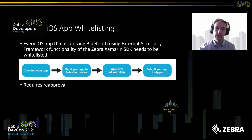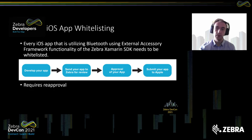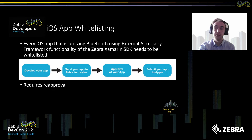iOS requires whitelisting of your apps. Every iOS app utilizing Bluetooth using the external accessory framework functionality of our SDK will need to be whitelisted. The process is: you develop your app, send it to Zebra for review, and once approved, you can submit your app to the Apple Store. Whitelisting is not required if your app communicates via WLAN, Bluetooth Low Energy, or standard Bluetooth profile — only for Bluetooth using the external accessory framework.